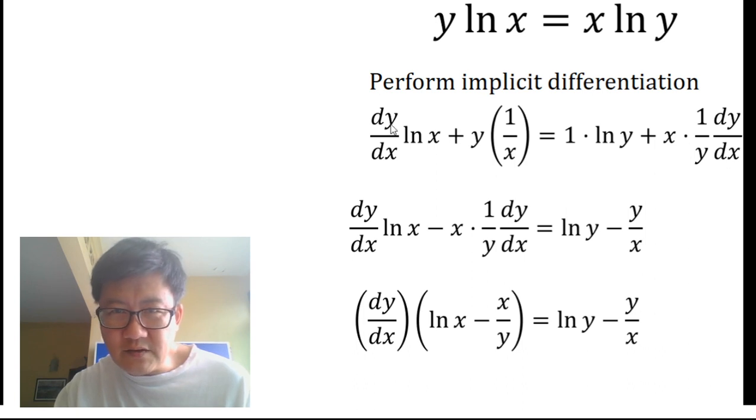What we do is take all the terms that have dy/dx in them to the left. So this remains, and this term here we bring it over. When we bring it over, it becomes minus x times 1 over y dy/dx. This has been brought over here.